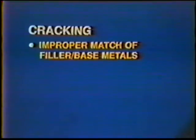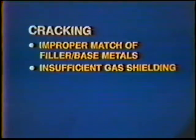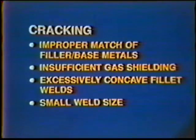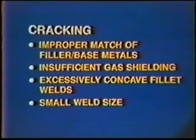Cracking sometimes occurs on aluminum welds due to a variety of problems. Some of the most common causes are improper match of base and filler metals, insufficient gas shielding, excessively concave fillet welds, or too small a weld bead for the base metal thickness. Cracks can also start in the weld crater, caused by not filling the crater at the end of the weld bead.